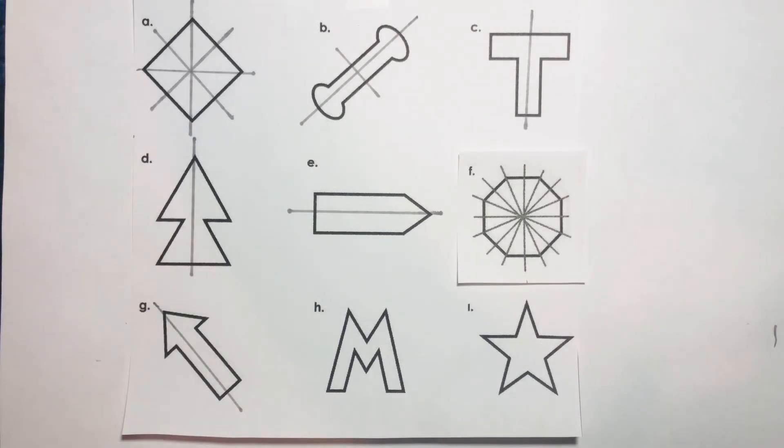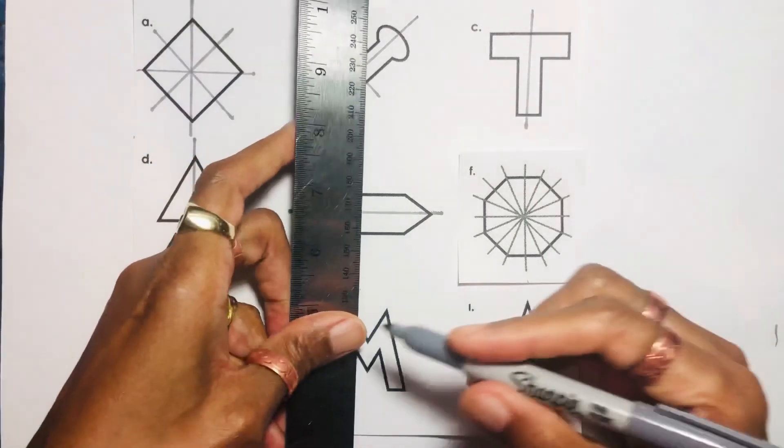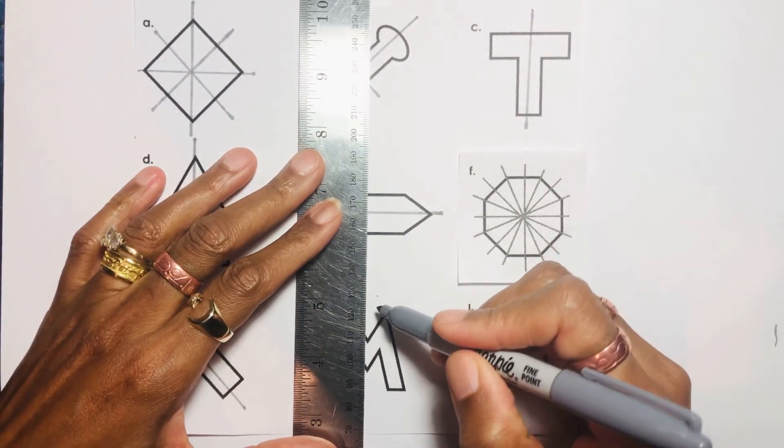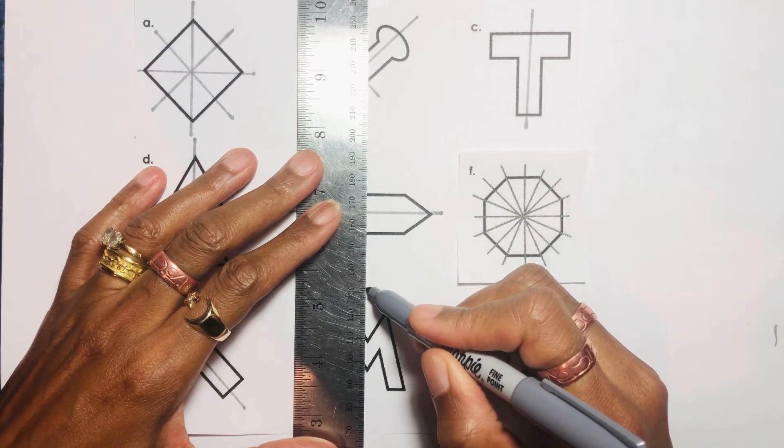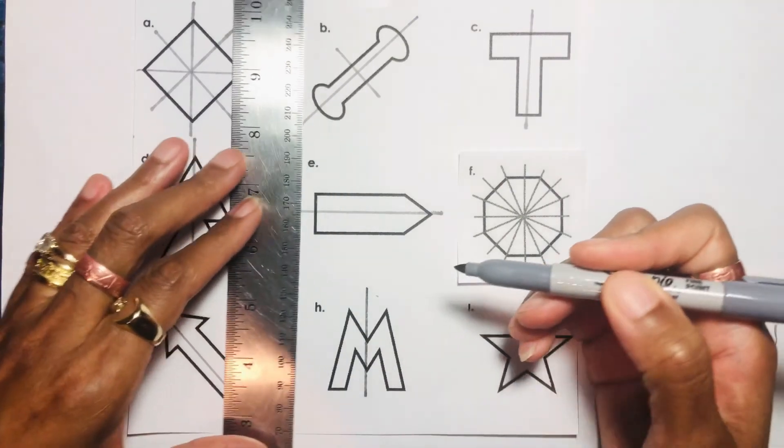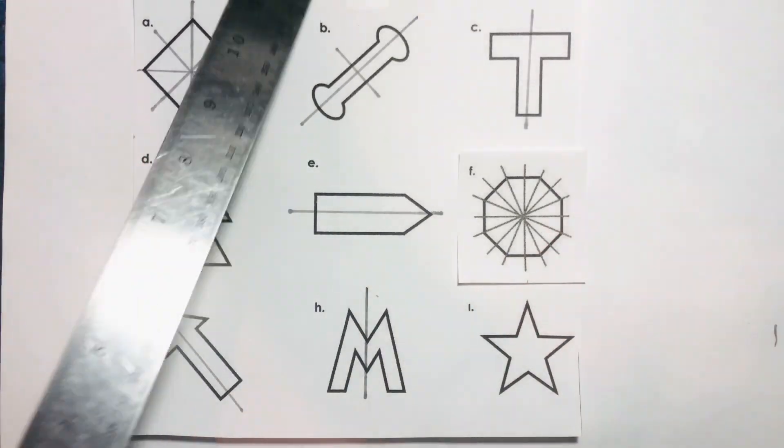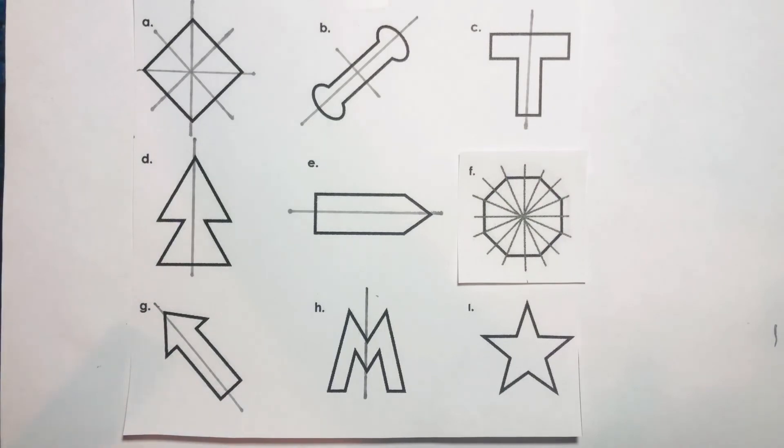Now if we look at H, what do we see here? We see the letter M, and where can we draw the line of symmetry there? Is it vertically or horizontally? Definitely vertically. So I can go straight down the middle here and I will have two separate halves that would mirror each other on either side.